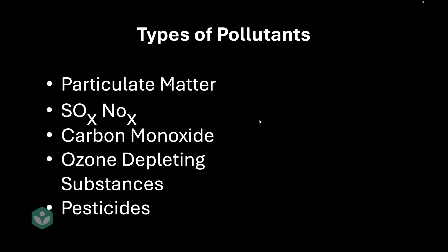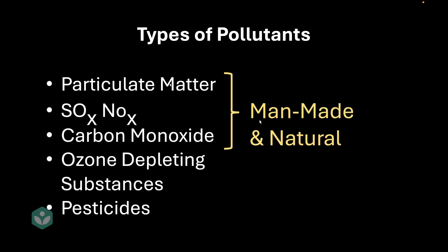To summarize, these are the pollutants we discussed: particulate matter, sulfur oxides, nitrogen oxides, carbon monoxide, ozone depleting substances, and pesticides. If you look carefully, the top three can be classified as both man-made and natural sources of pollution, whereas the bottom two are usually only man-made. That's it for this video — thanks for watching.